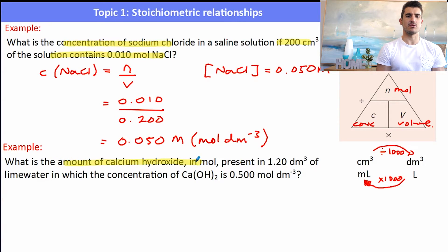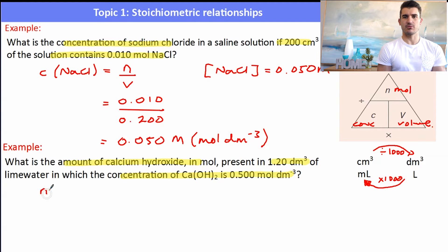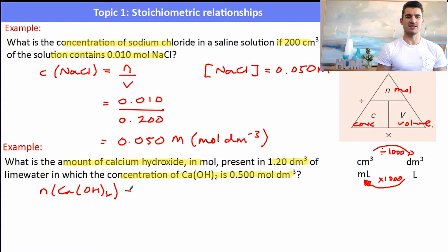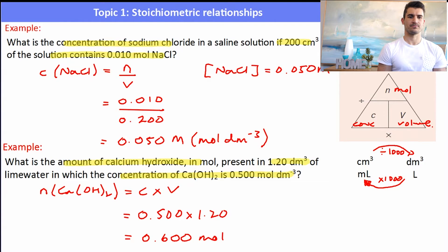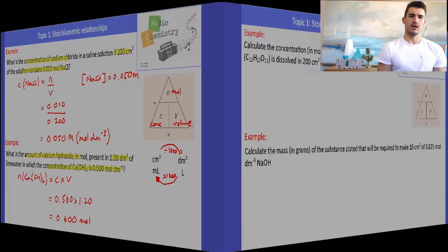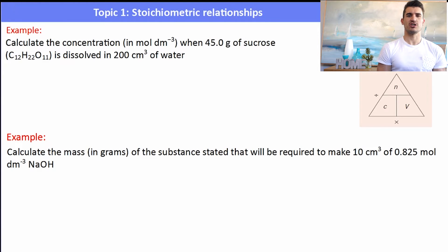Next example: what is the amount in moles of calcium hydroxide present in 1.2 dm³ of lime water with a concentration of 0.500 mol/dm³? Using n = C × V: n = 0.500 × 1.2 = 0.600 mol.